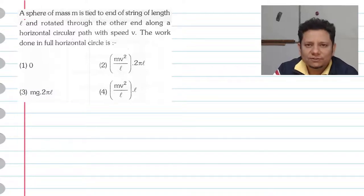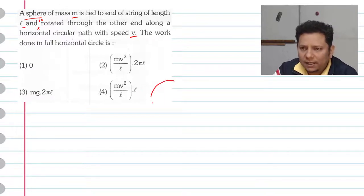The question says a sphere of mass m is tied to end of string of length l and rotated through the other end along a horizontal circular path with speed v. Work done in full horizontal circle will be: option is 0, mv squared by l multiplied by 2πl, mg 2πl, or mv squared by l into l.